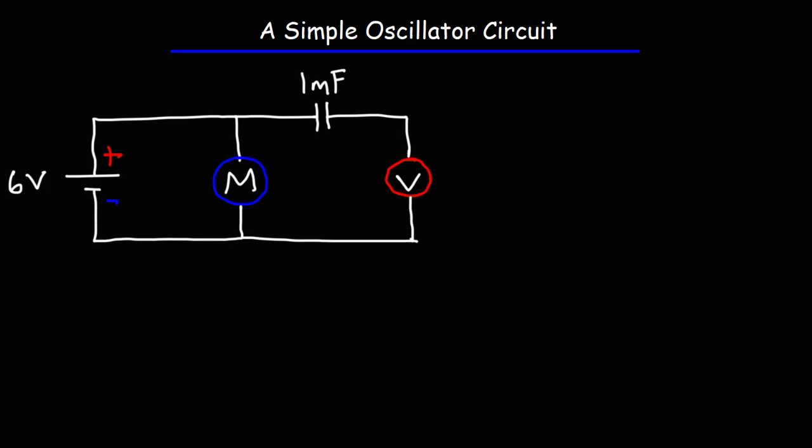In this video, we're going to talk about how to make a very simple oscillator circuit. So what you need is a battery. I'm using a 6-volt battery,